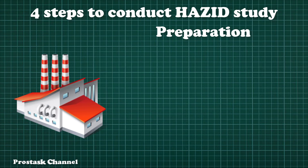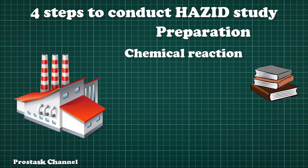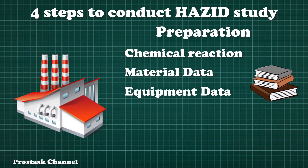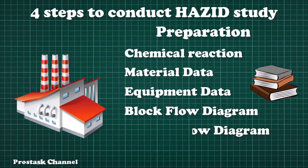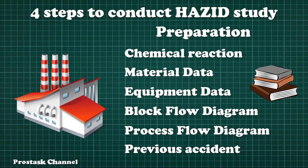The required information or knowledge before the HAZID Study covers something about the process. The minimum documents required are: Major Chemical Reaction, Raw Material, Intermediate Material, Product Material, Additive, Catalyst, Material Safety Data Sheet, Critical Process Equipment, Process Block Flow Diagram, Process Flow Diagram, and Previous Accident History.